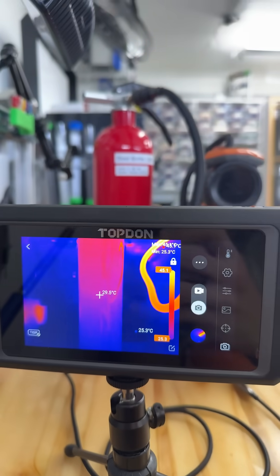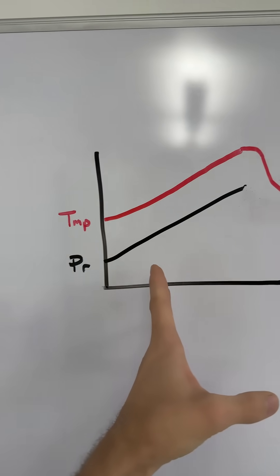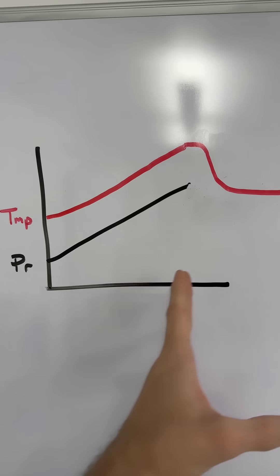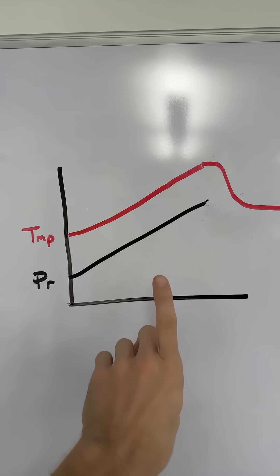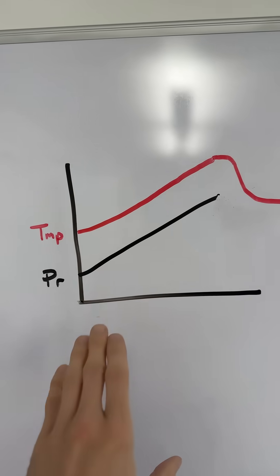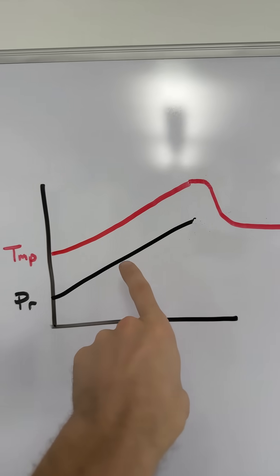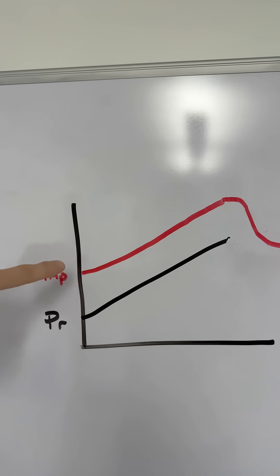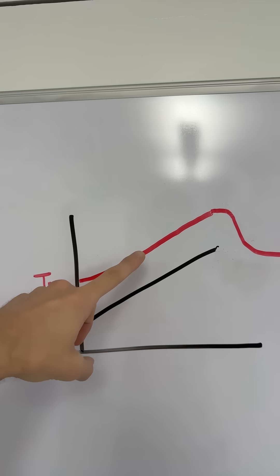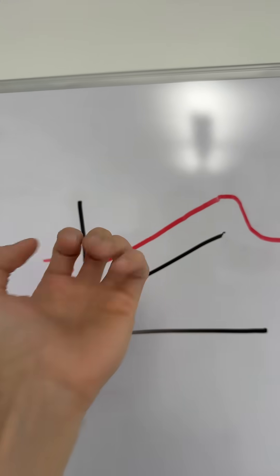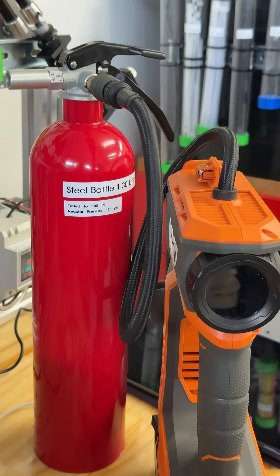It's going to peak maybe around 30 degrees. For the first period while we raise the pressure, we're adding energy into the system — the system being inside the bottle — and the pressure is climbing up, but also the temperature of that air is climbing up inside the bottle, and that's part of the whole energy equation.